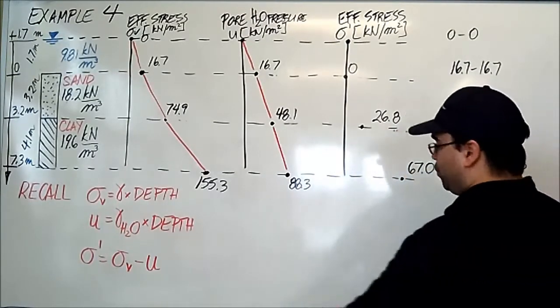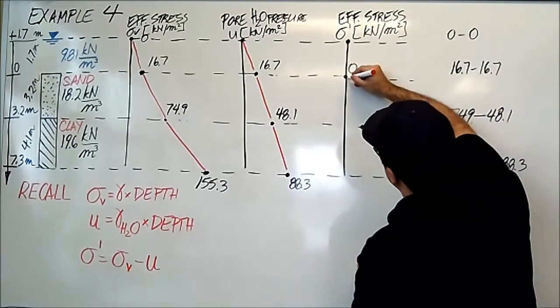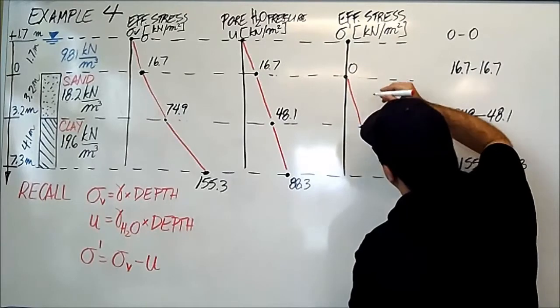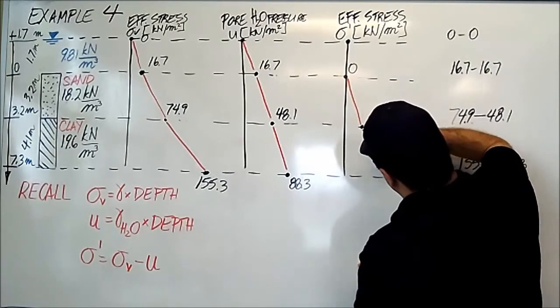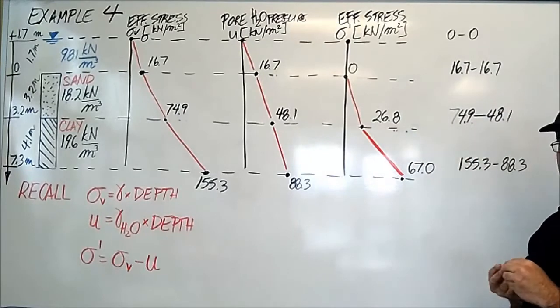And now I'm going to connect these points: zero, zero, 26.8, and 67. Pretend this is a nice straight line.